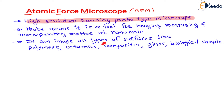This atomic force microscope can image any type of surface, such as polymers, ceramics, composites, glass, as well as biological samples. There are many cells in your blood, and to magnify and see the image of these cells or any biological samples, this atomic force microscope is useful.